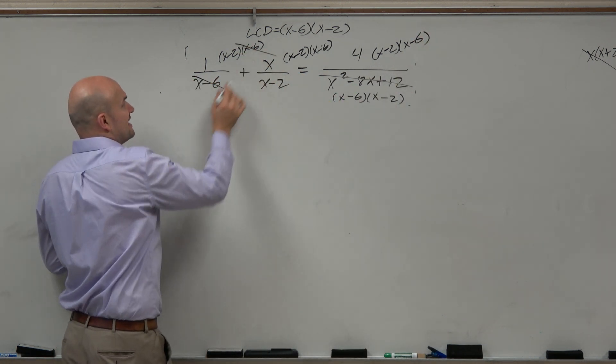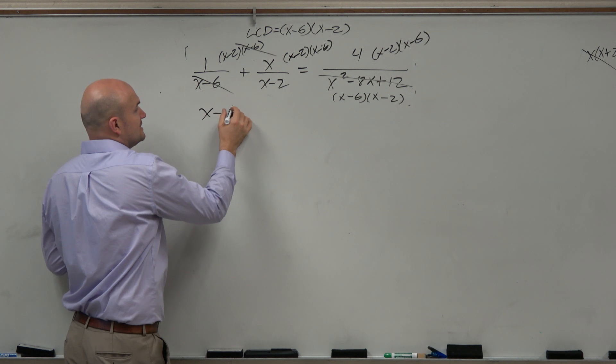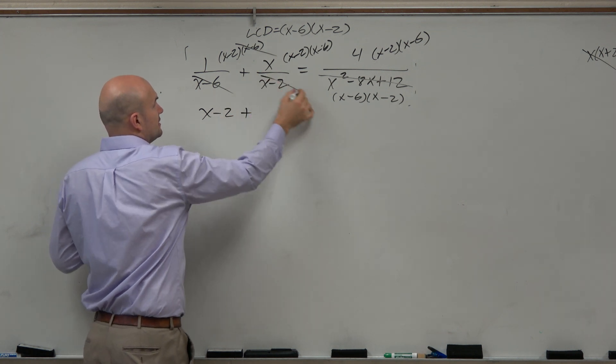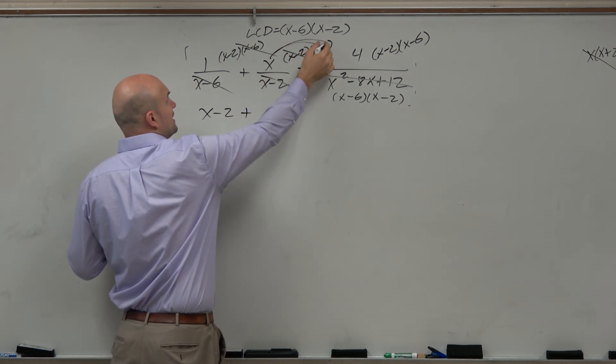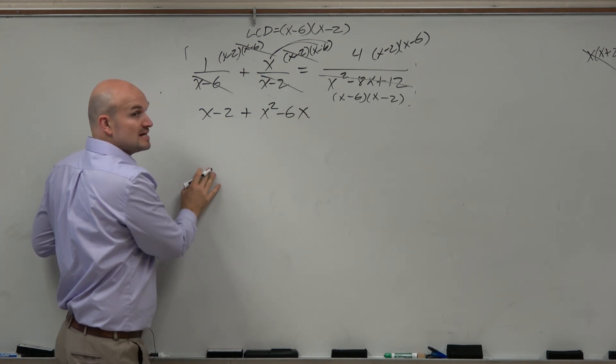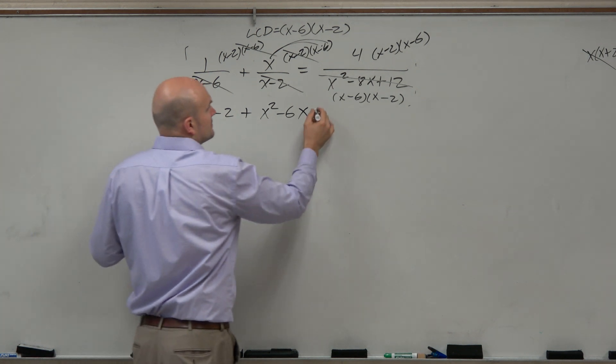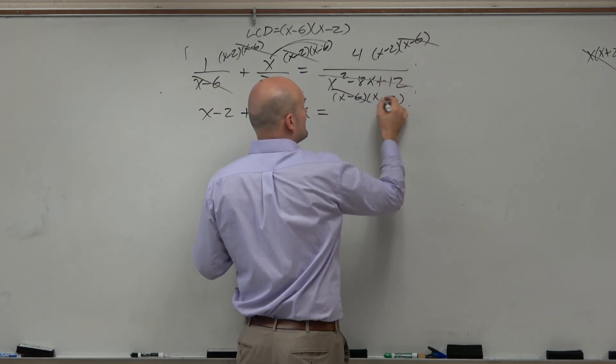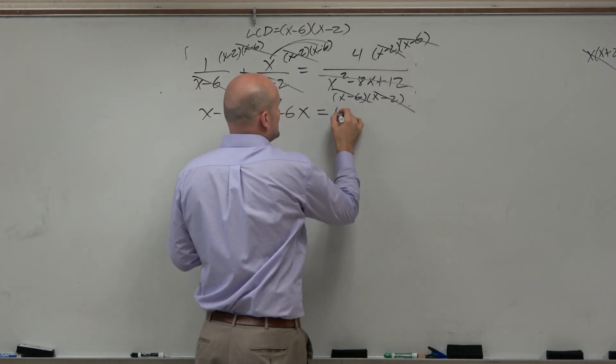So here, the x minus 6's divide out, just leave me with 1 times x minus 2. Here, the x minus 2's divide out. Make sure you apply the distributive property there - leaves me with x squared minus 6x. Notice how I apply the distributive property. Here, the x minus 6's divide out, the x minus 2's divide out, just leaves me with the number 4.